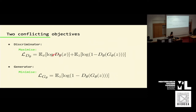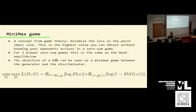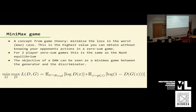In formal terms: the discriminator wants to maximize the correctly classified data points — high probability for real data, low probability for generated samples — written as maximizing the expectation over data and the expectation of one minus the generated probability. The generator wants to minimize that last part. This creates a minimax game. A minimax game in game theory asks: how can I minimize my loss assuming the worst case? For two-player zero-sum games, these have special properties. This is a two-player zero-sum game — generator versus discriminator with opposing objectives — and the best solution is the Nash equilibrium, the best you can possibly do under these circumstances.